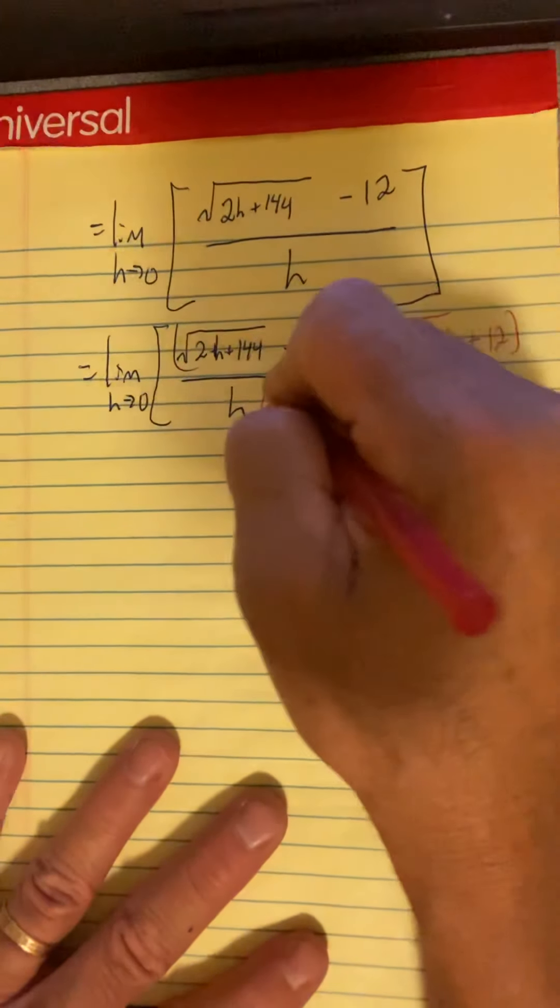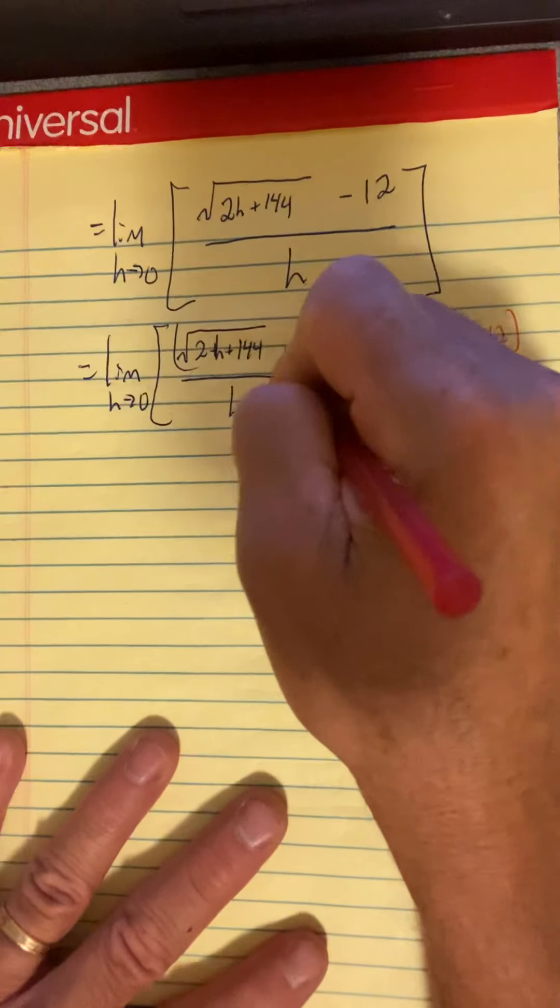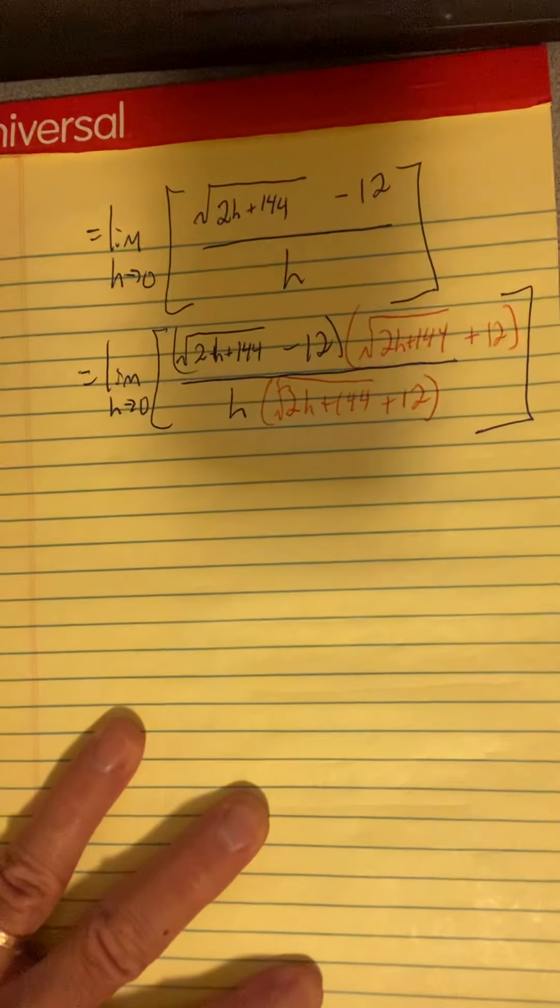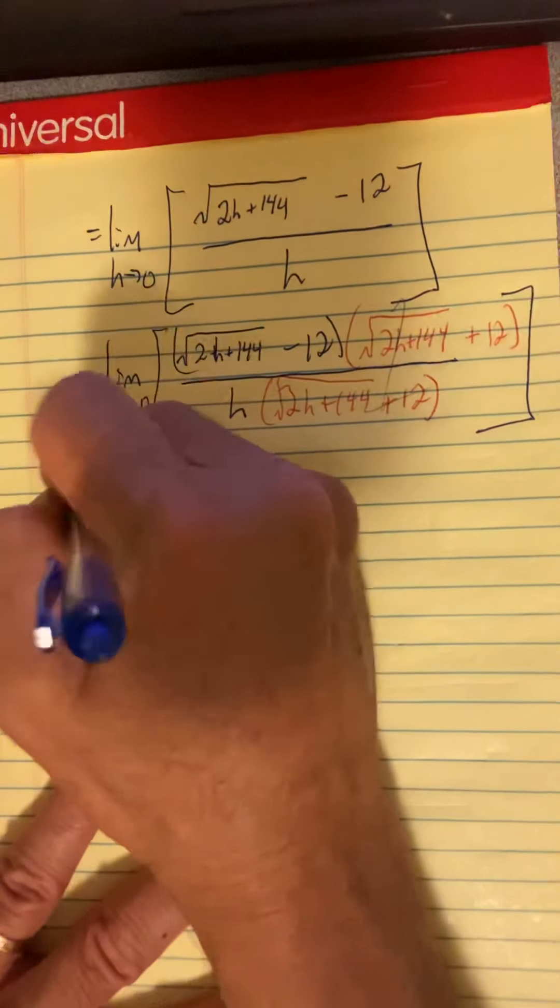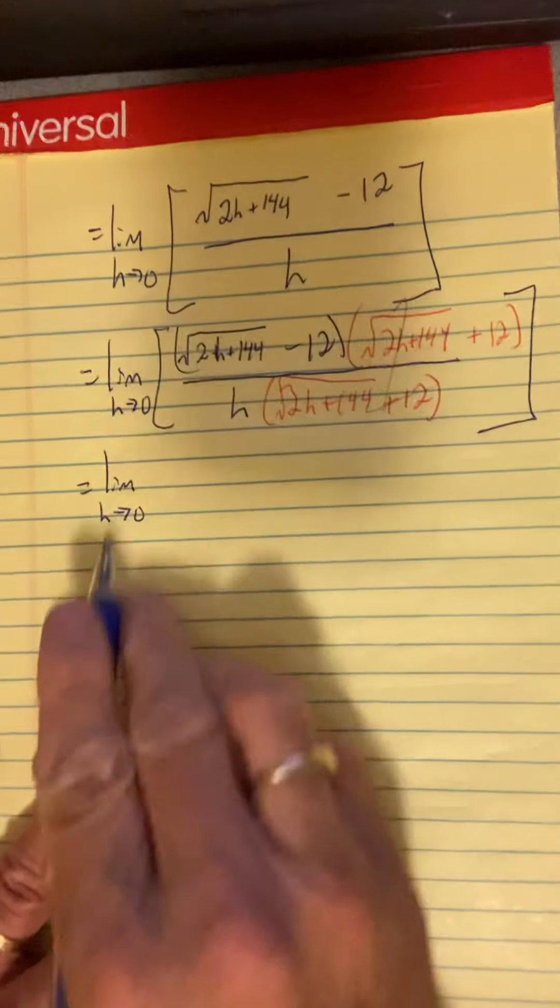Well, the conjugate is the same binomial, only change the sign in the middle. That's what a conjugate is. And if I multiply the top, well, I must multiply the bottom by the exact same thing. So I'm actually multiplying by a form of one here and not changing things.